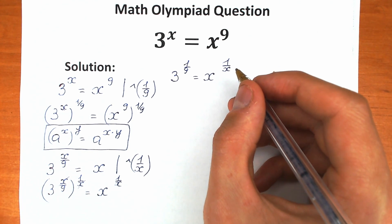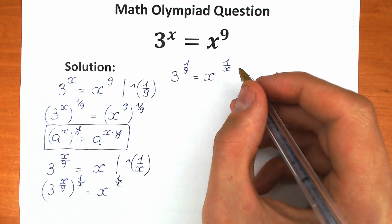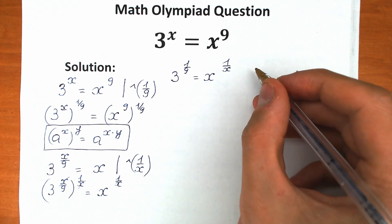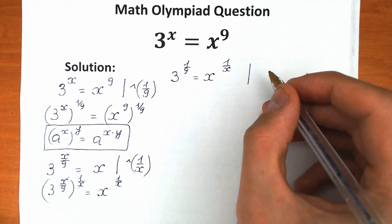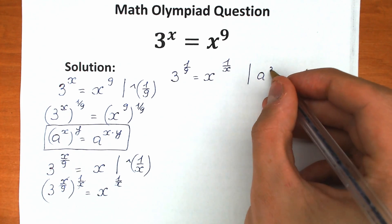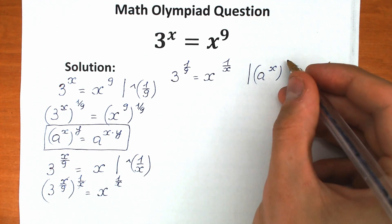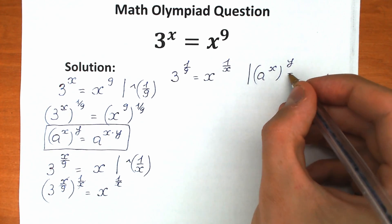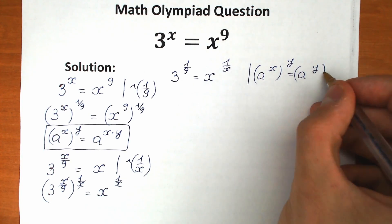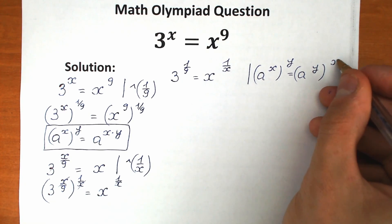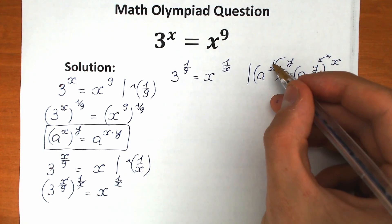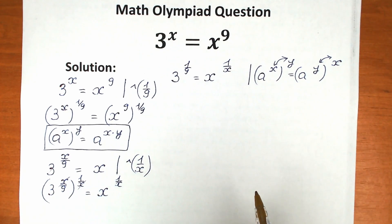What are we going to do next? I suggest a really great trick. Before showing this trick, I'm going to show a really important rule: if we have a to the power x raised to the power y, we can write it as a to the power y raised to the power x. Someone calls this the rule of interchange — it's a really important rule in our case.